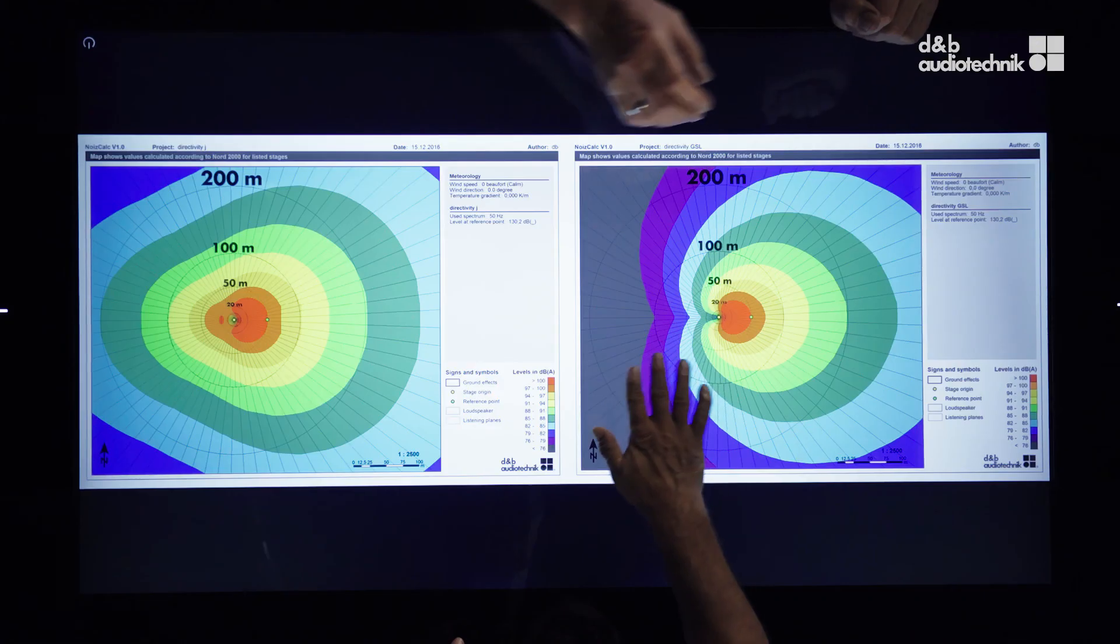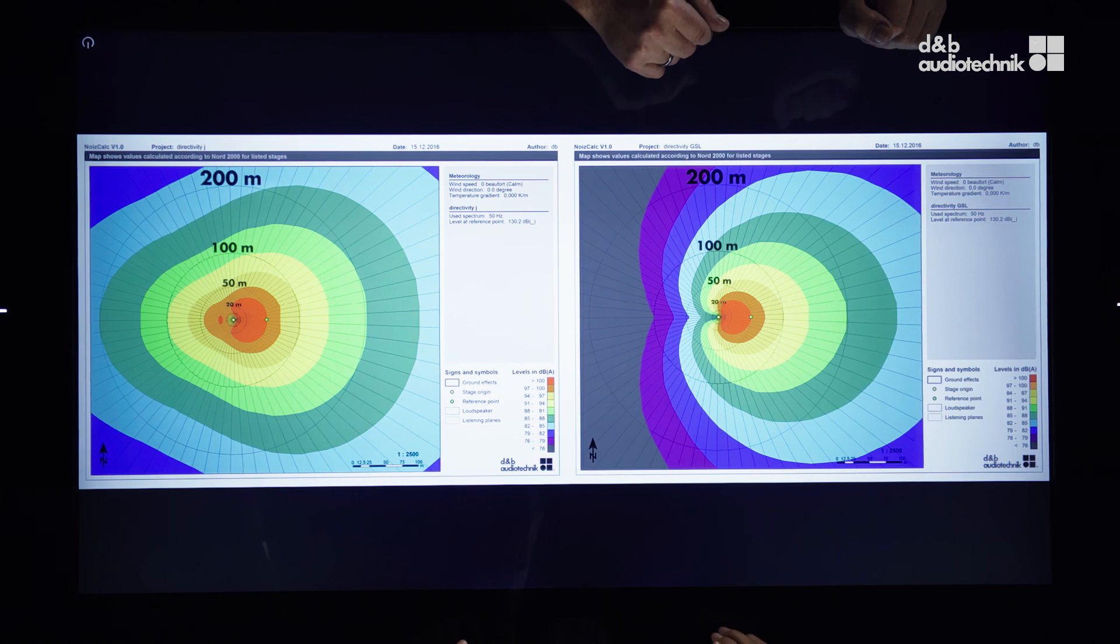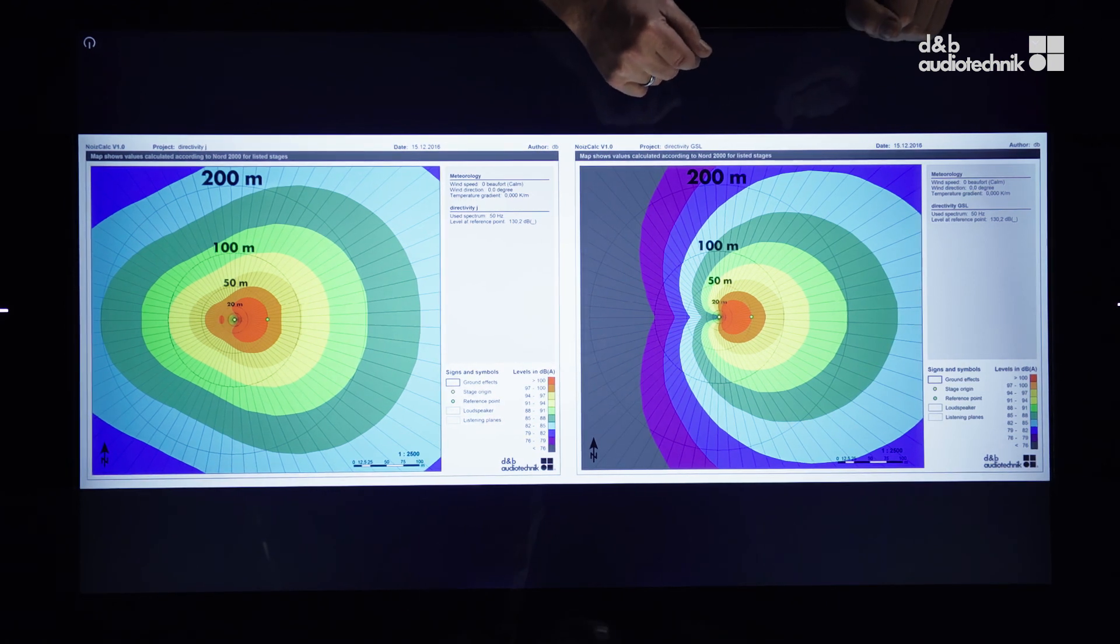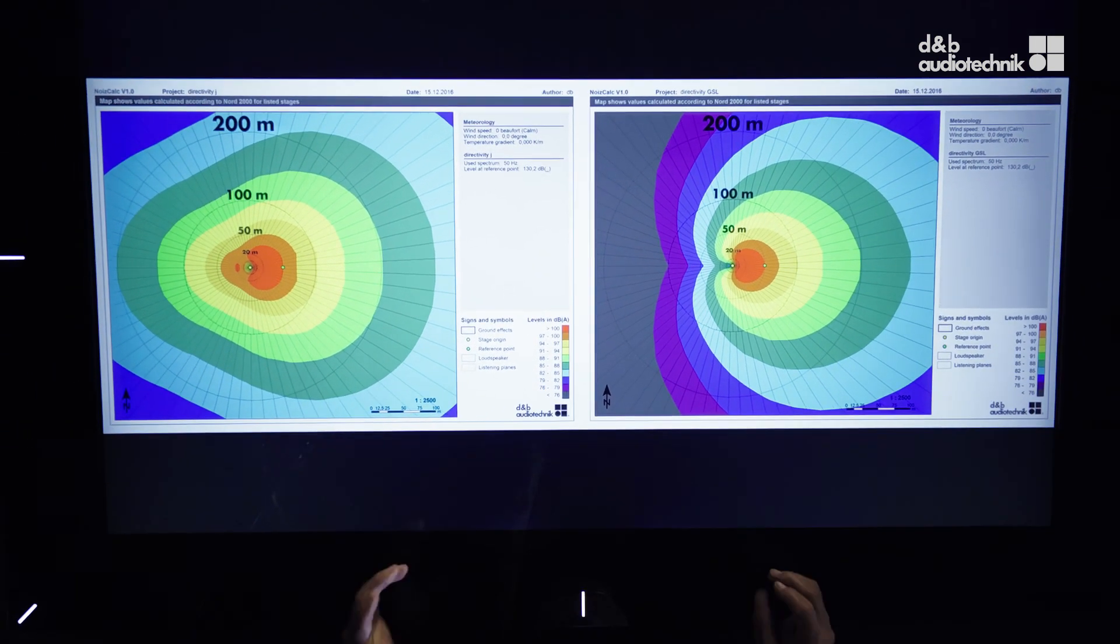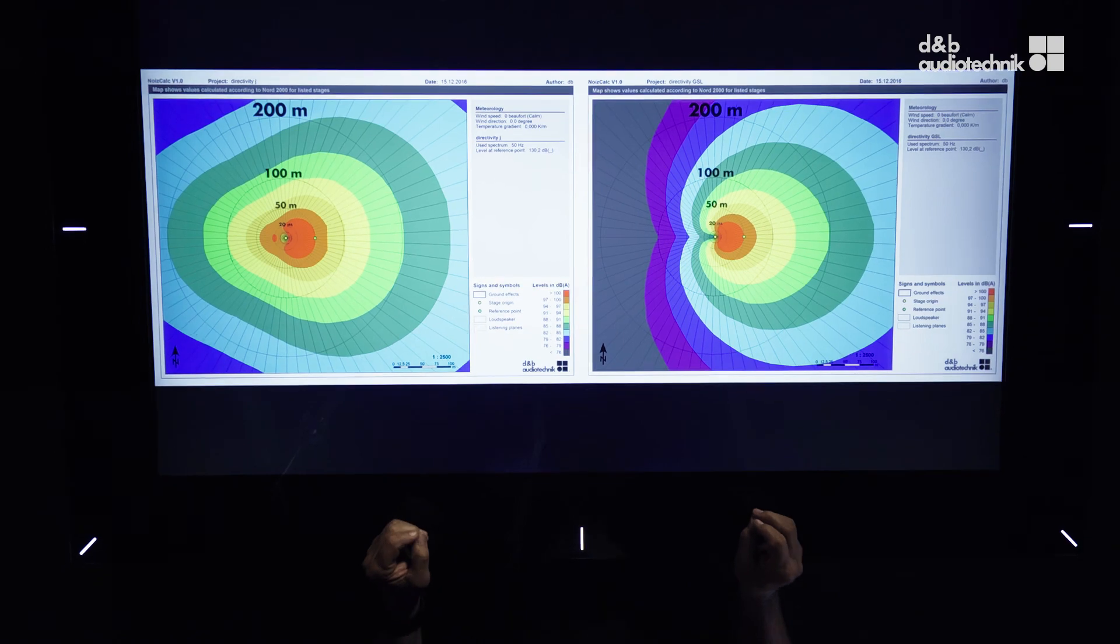The rejection is about 12 to 15 dB in the whole area which is really impressive. This is our solution to what we think is one of the very important factors in the future of open air live reinforcement, to control and to reduce emission very drastically. It's part of the entire package that comes with the systems.